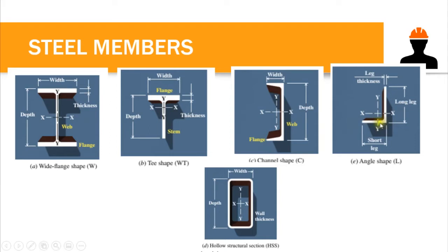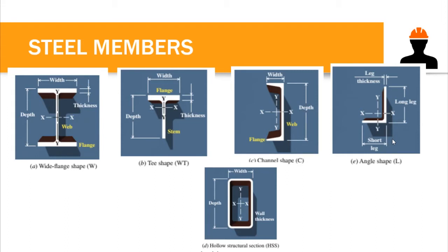We also have the angle shape, shaped like an L or reversed L. There are two types: the equal leg angle shape, where the widths of both legs are equal, and the unequal angle shape, where we have a long leg and a short leg with different dimensions. We also have the double angle shape, which is two angle shapes placed on opposite sides. Angle shapes are usually used in trusses, for roofing or bridges.